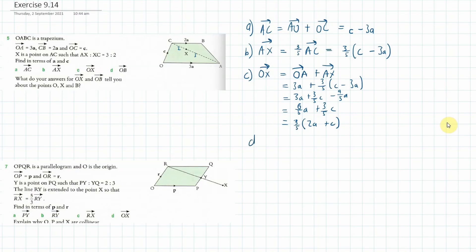Now D. What do I know about D? Well, D is OB. Now O to B is equal to O to C plus C to B. And O to C is C. And C to B is 2A. So not C plus 2A or 2A plus C.